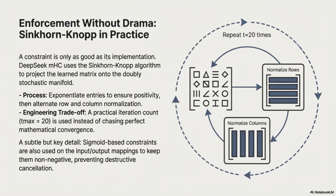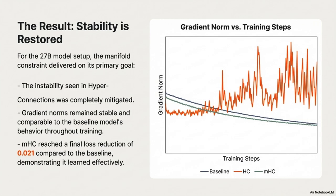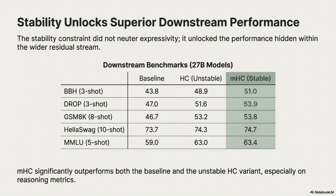For their 27B models, the constrained MHC completely mitigated the instability, giving a stable gradient norm and a final loss reduction of 0.021 compared to the baseline. Looking at Table 2, we see real gains: on the BBH reasoning benchmark, MHC gets 51.0 - a huge jump over the baseline's 43.8 and better than the unstable HC's 48.9. For reading comprehension DROP F1, MHC hits 53.9, beating both. The stability constraint didn't just prevent failure - it actually unlocked the performance that was hiding in that wider residual stream all along.